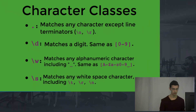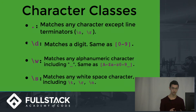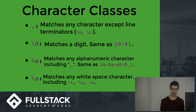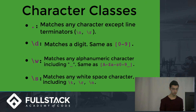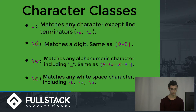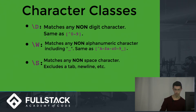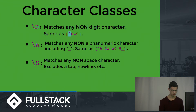Let's look at the special characters in regex. A period matches any character except a line terminator — so it could be numbers, letters, anything, just not a newline or carriage return. \d matches a digit, which is the same as the character set [0-9]. \w matches any alphanumeric character — uppercase letters, lowercase letters, numbers, plus an underscore. \s matches any whitespace character, including a tab, carriage return, or new line. The uppercase versions are the opposites: \D matches anything that's not a digit, \W matches anything not alphanumeric, and \S matches anything that's not a whitespace character.